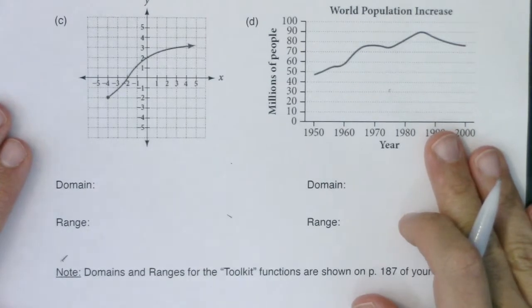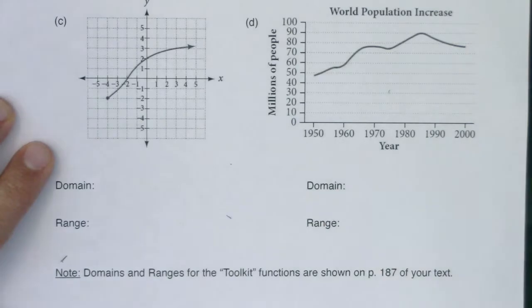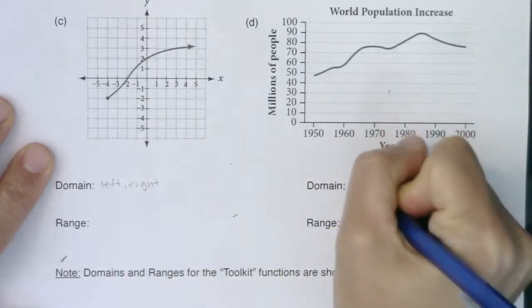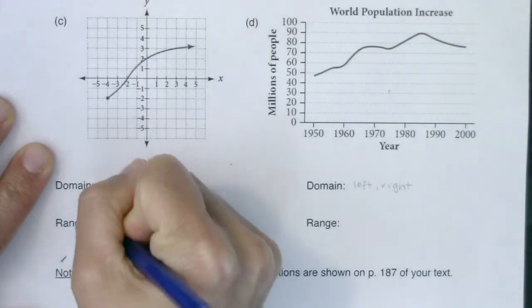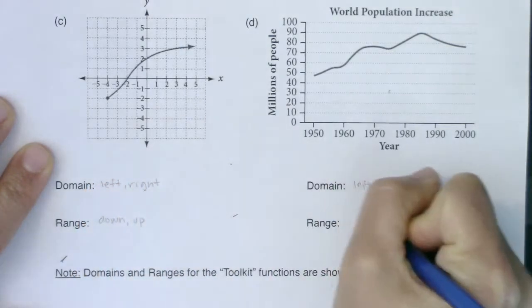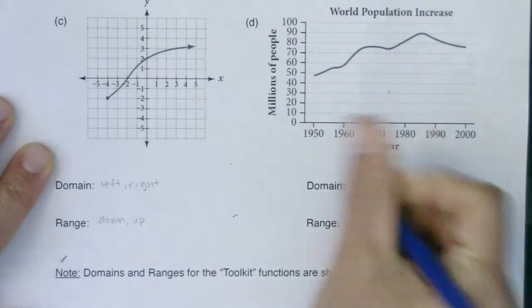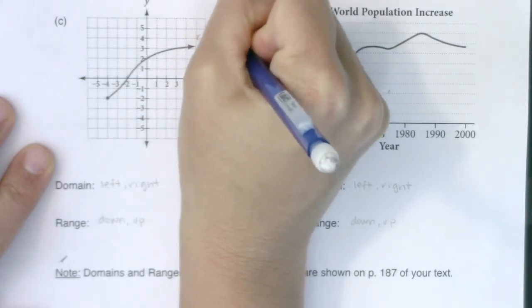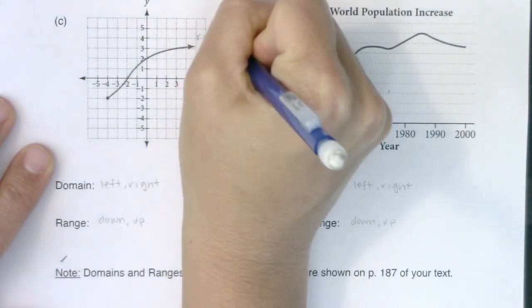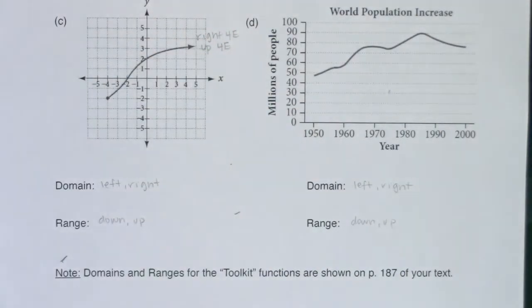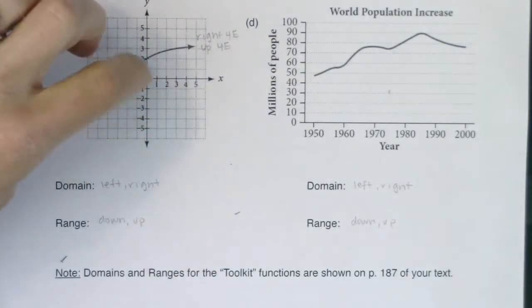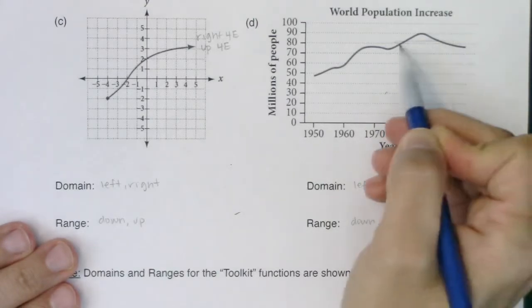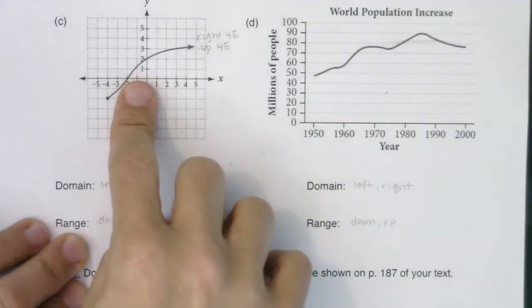So as we're moving through this, I'm just going to write left to right on both of these for domain. And now we're going to go down to up. I do notice an arrow here. So I want to be attentive to that. This is going right forever and up forever. So with that, these are both functions. They would both pass the vertical line test. This one would pass the horizontal line test, so it would be one to one. This would fail the horizontal line test. You can see if I put a horizontal line right through there, it would touch at two places. So this is a one to one function. This is not.